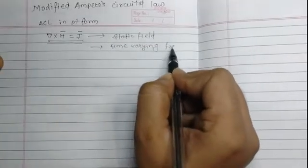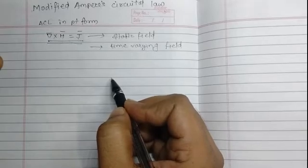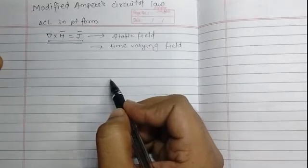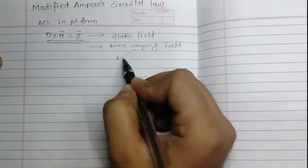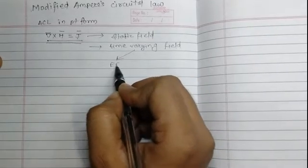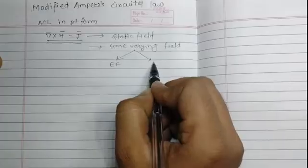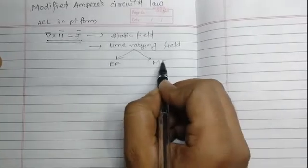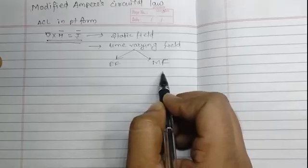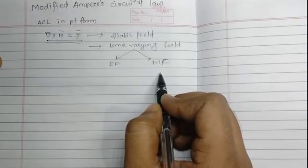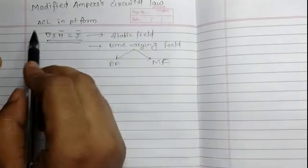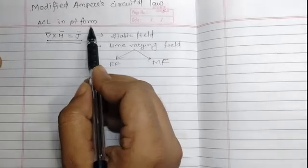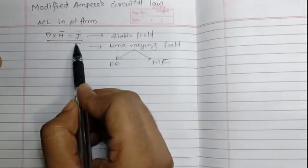With this, I am introducing the time-varying concept. The field which changes with time is known as a time-varying field. This time-varying field can be a time-varying electric field or a time-varying magnetic field. Let us first see the time-varying magnetic field and its effect. If we have a time-varying magnetic field, the Ampere's Circuital Law in point form gets modified.